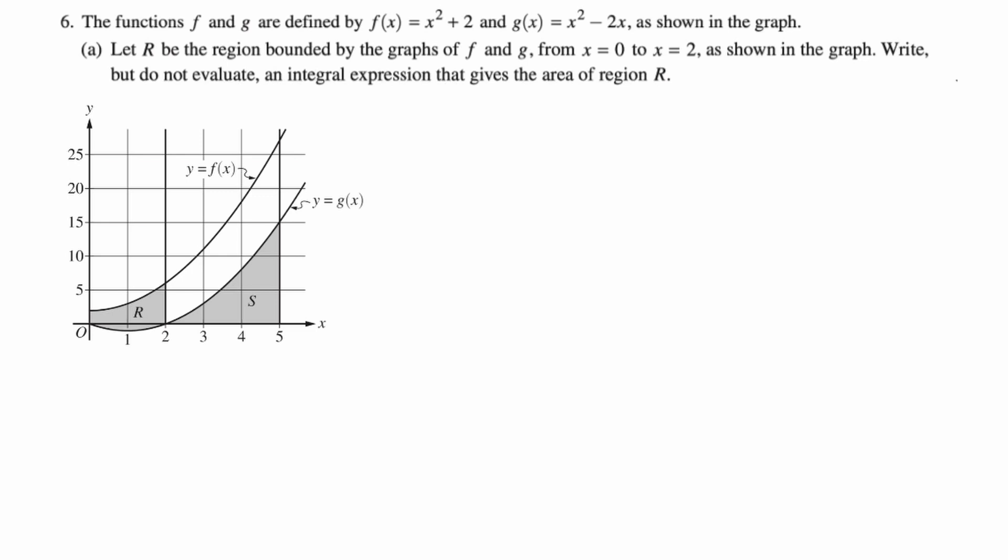Part A: Let R be the region bounded by the graphs of f and g. So R is just that little region shown from zero to two. Write but do not evaluate an integral expression that gives the area of the region. So we are going to integrate from start to stop and top takeaway bottom.